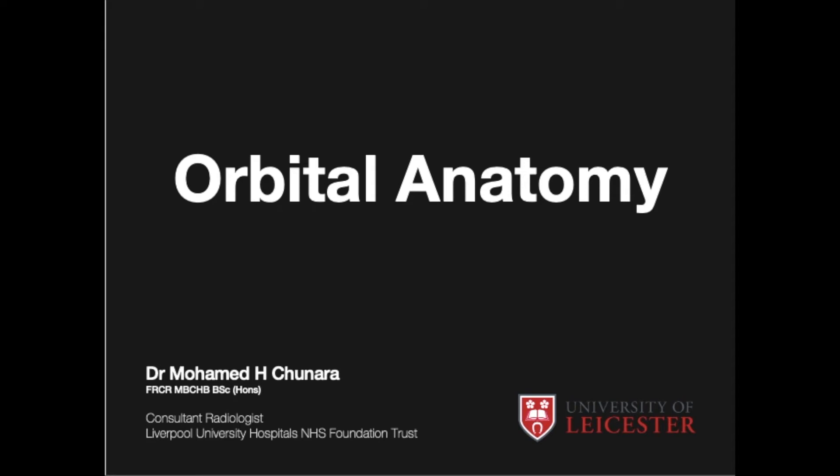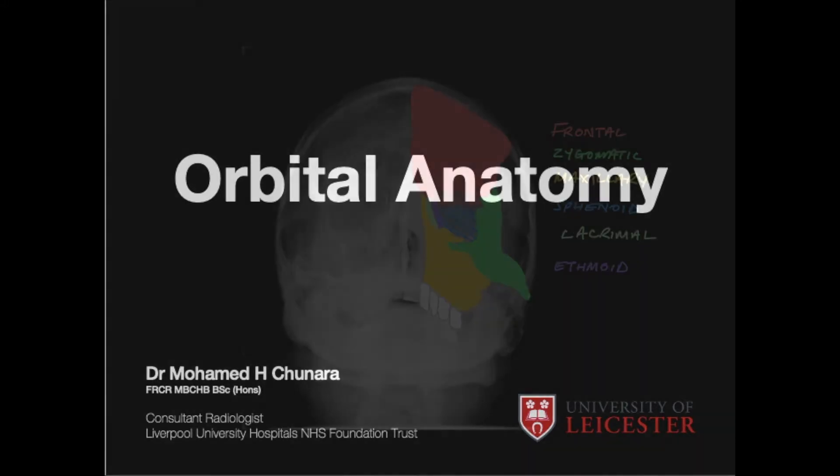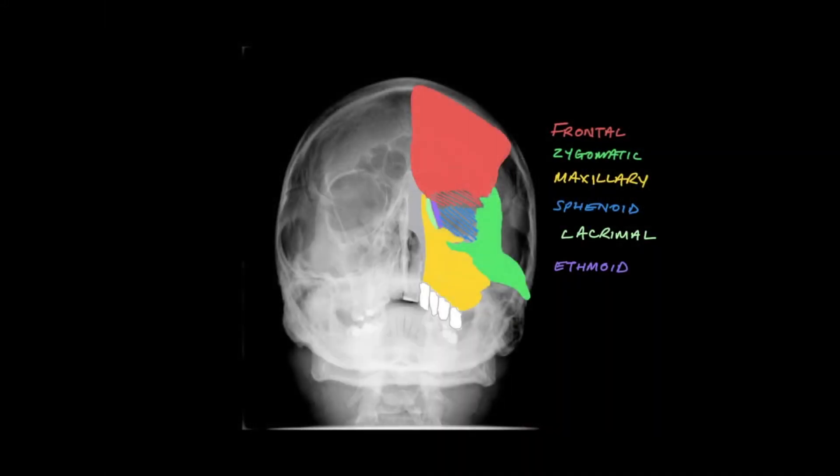Hello, I'm Mohamed Tunara. In today's video we will be reviewing pertinent radiological anatomy relating to the orbits. This is a frontal orbital radiograph. I've overlapped and annotated the left side of this image to help give you an idea of the bones that contribute towards the bony orbit.